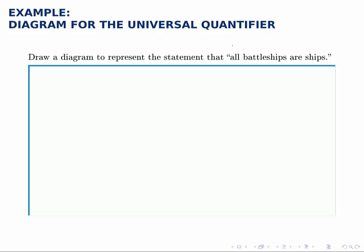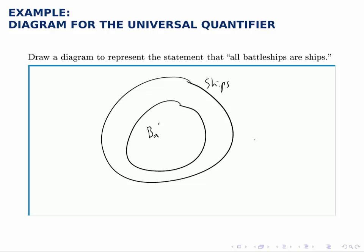To say that all battleships are ships, we can draw a diagram like the following. First we have ships, and then within that we put battleships.